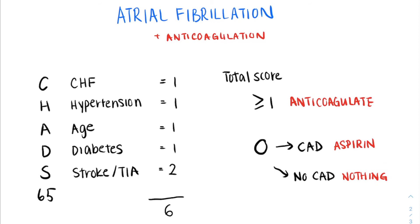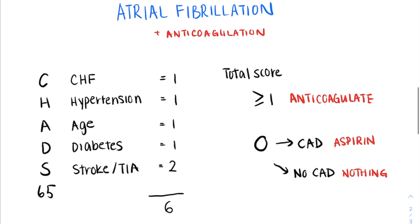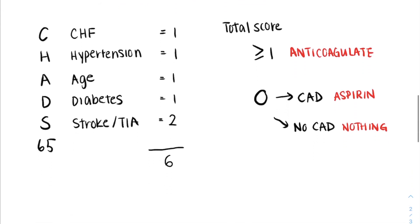Consider that the use of anticoagulation is to prevent an annual risk of stroke, and so there isn't necessarily an urgency to anticoagulate patients right away, especially when you consider an in-hospital setting where there may be procedures or other contraindications to anticoagulation, and that's something to keep in mind.